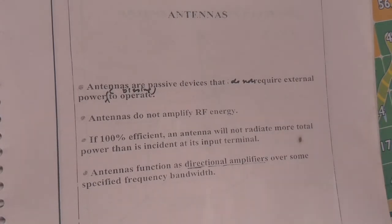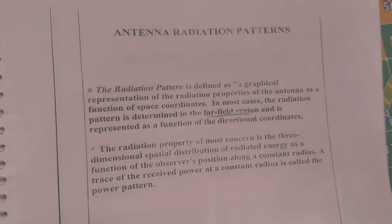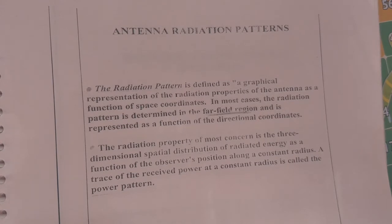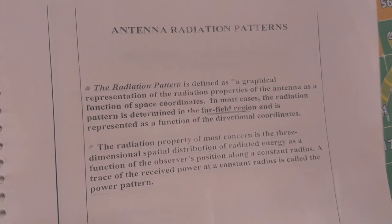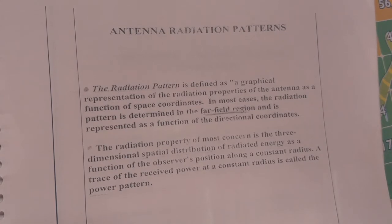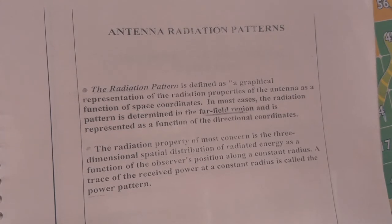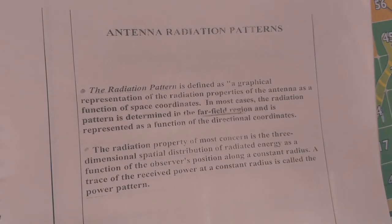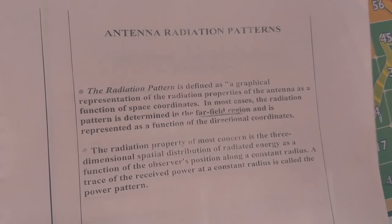An antenna functions as a directional amplifier over some specified frequency bandwidth. The radiation pattern is defined as a graphical representation of the radiation properties of the antenna as a function of space coordinates. In most cases, the radiation pattern is determined in the far-field region and is represented as a function of directional coordinates. The radiation property of most concern is the three-dimensional spatial distribution of radiated energy as a function of the observer's position along a constant radius.